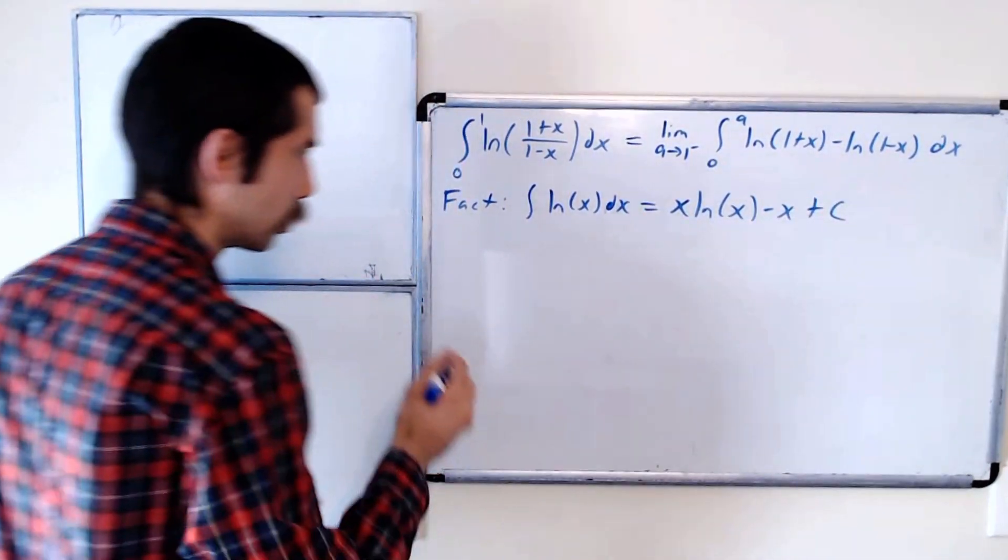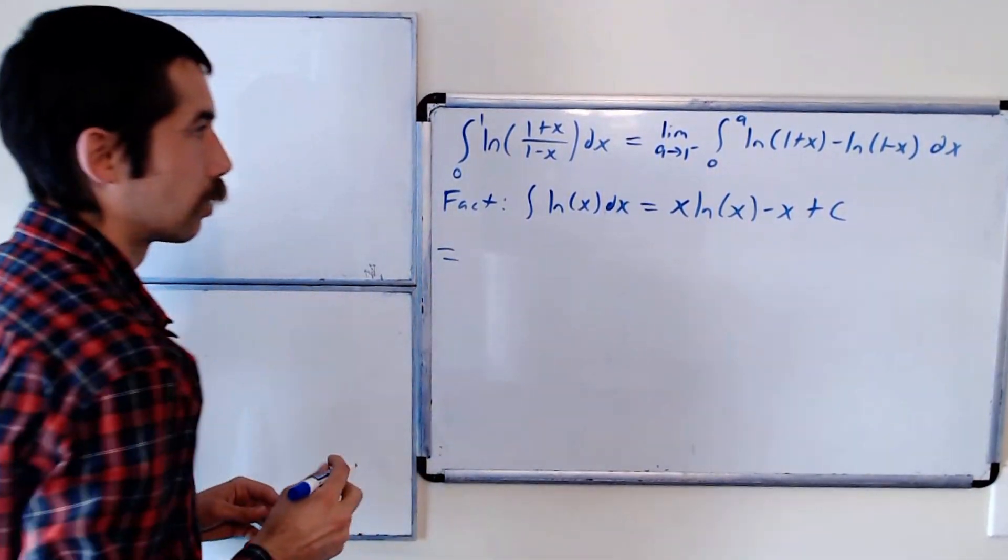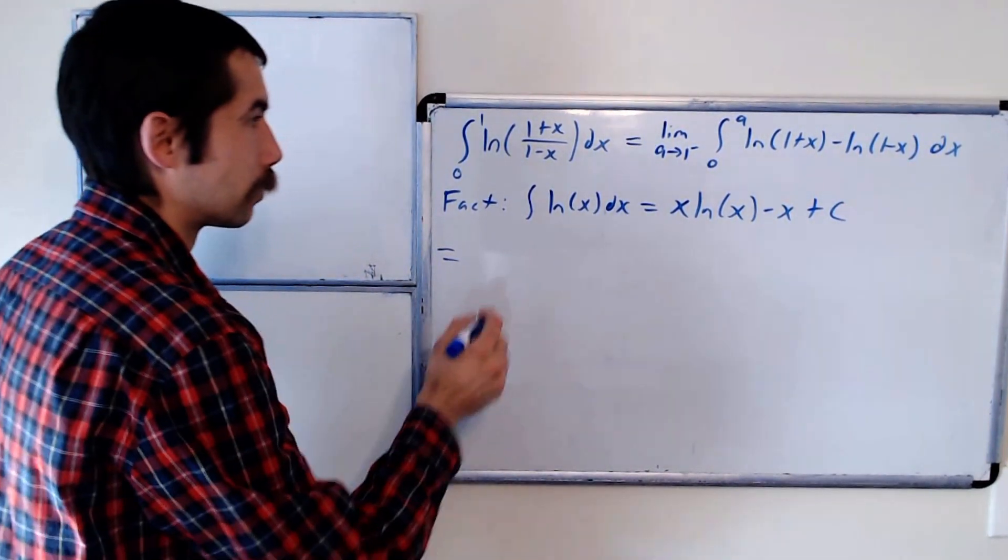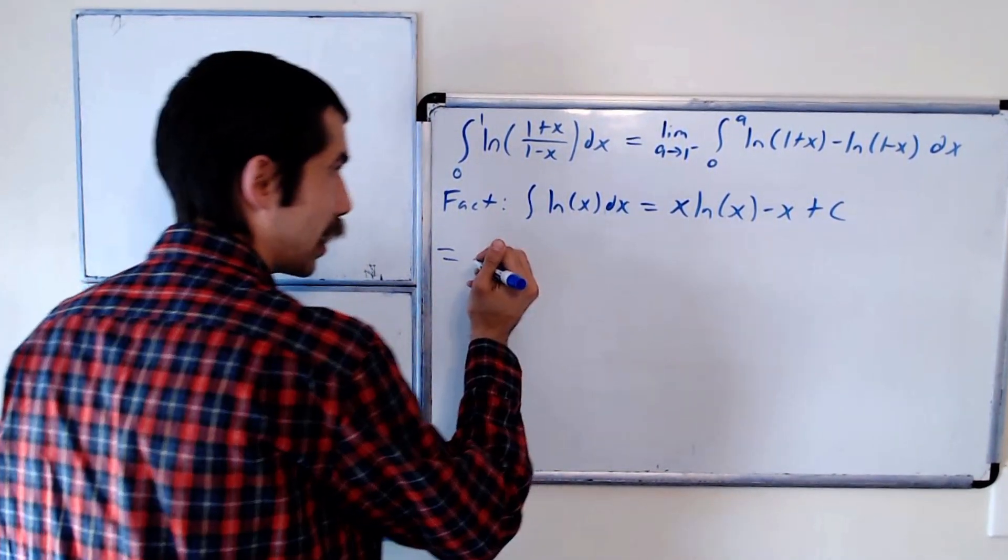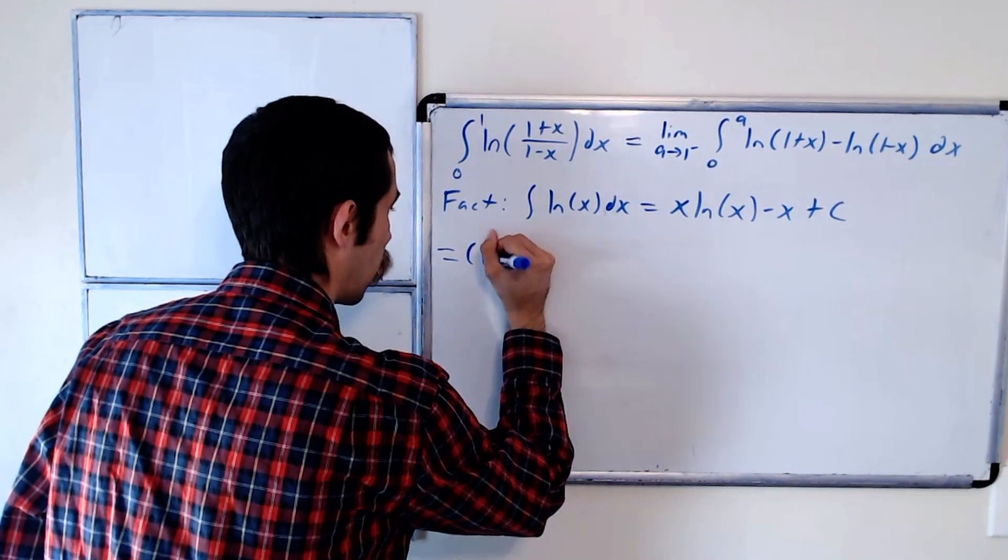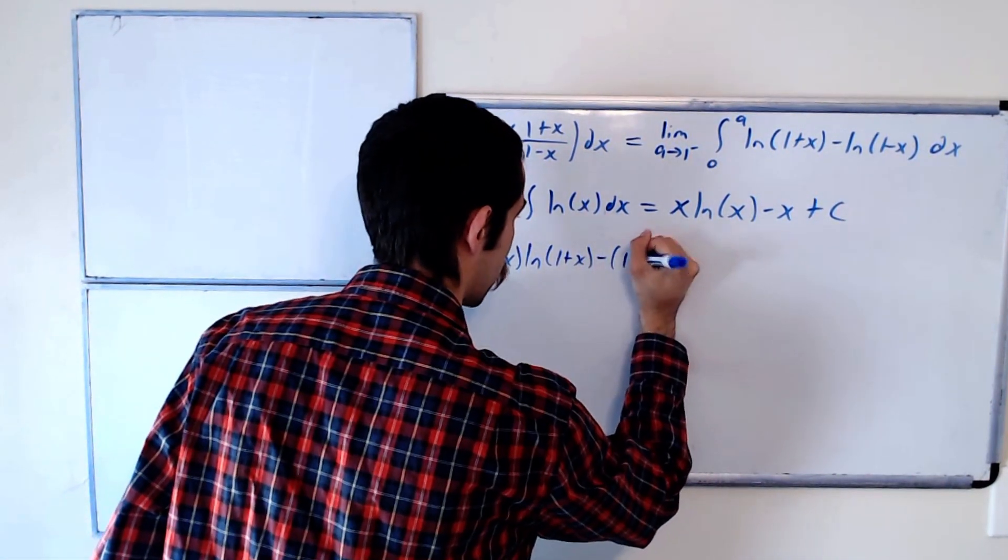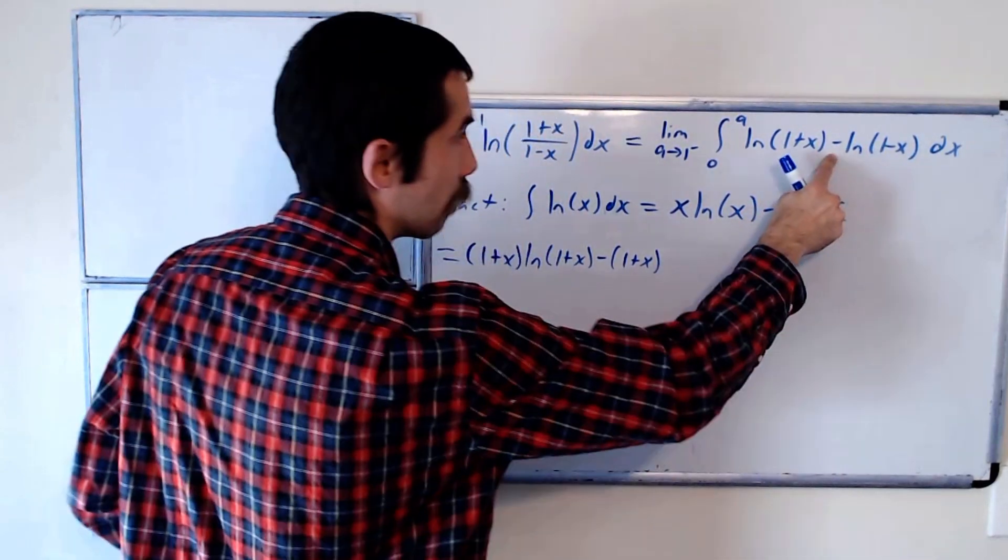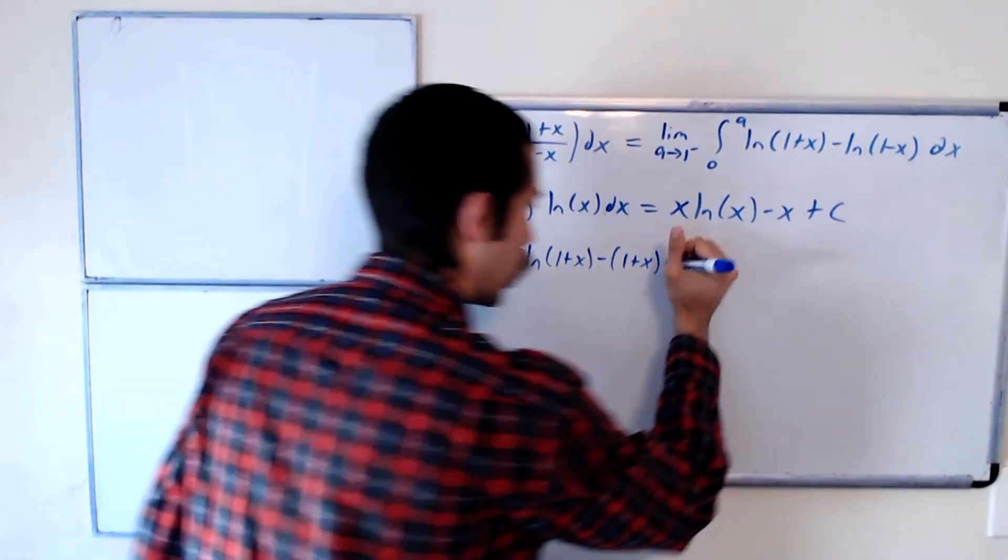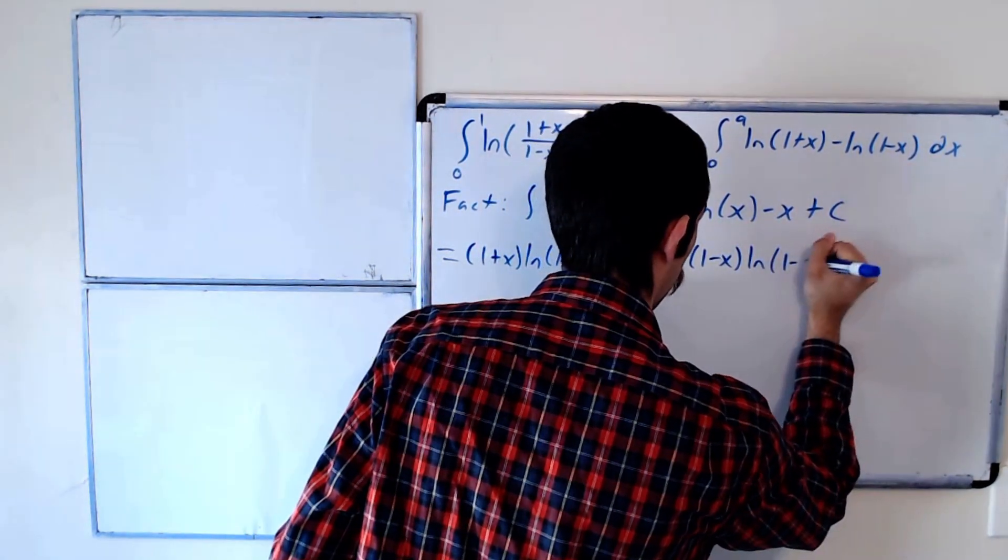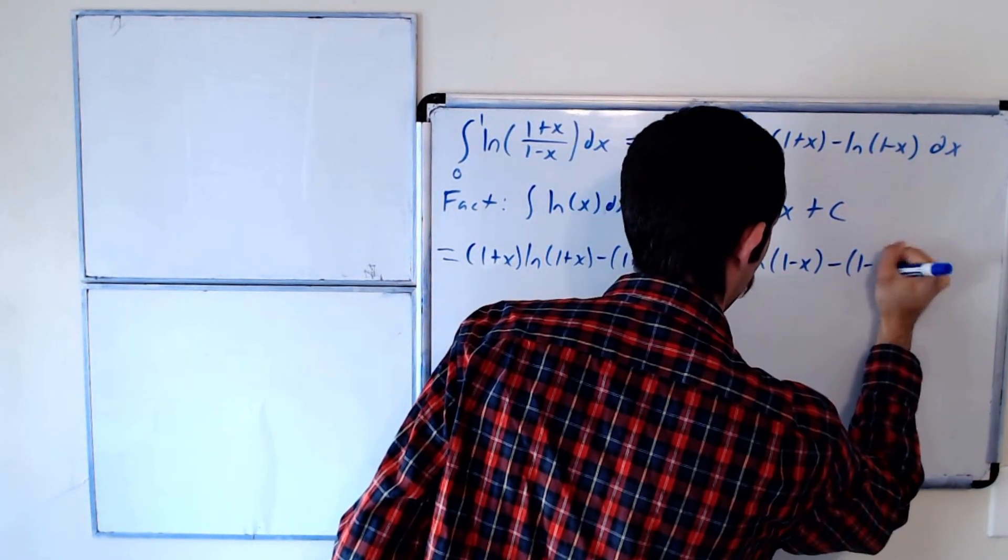When we evaluate these integrals, and you could prove this using integration by parts if you don't believe me, we get 1 plus x ln of 1 plus x minus 1 plus x. And then the minus will turn to a plus when we do the u substitution. Plus 1 minus x ln of 1 minus x minus 1 minus x.